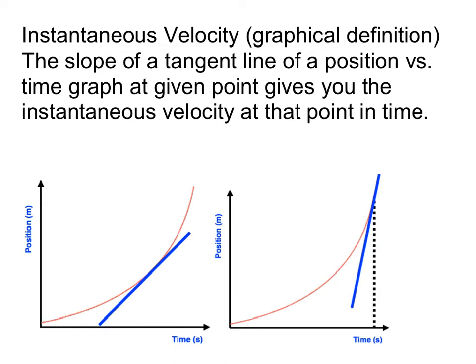Looking at my left position-time graph, if I take the tangent line at this point in time where I'm drawing my dotted line and draw a tangent line for the red curve — my tangent line is in blue — the slope of this blue line gives us the instantaneous velocity. Now, if we take the instantaneous velocity later on, moving the time to the right, we notice the blue tangent line has gotten steeper. Both are positive, so it's traveling in the forward direction, but at the later time it's traveling faster because it's much steeper.